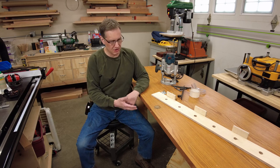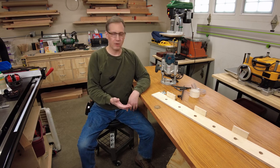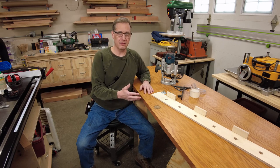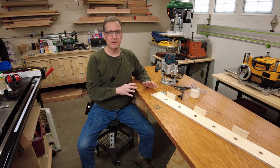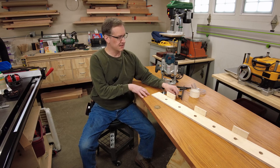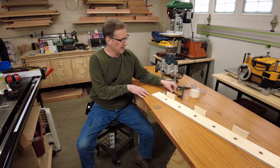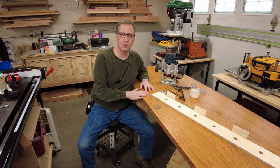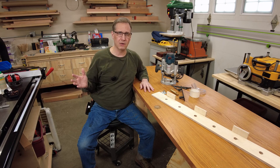A couple videos ago I made two sawhorses for this temporary workbench, which is really nothing more than just a solid core door sitting on those sawhorses. And what I want to do now is drill some three-quarter inch bench dog holes because I've got some of these brass bench dogs. I've got a planing stop and some other clamps. I'm planning to do some hand tool woodworking on here until I have the real workbench.